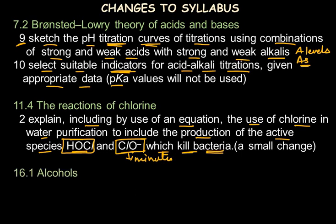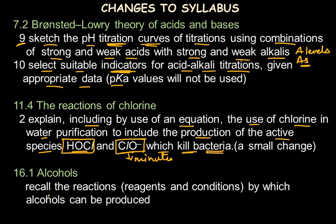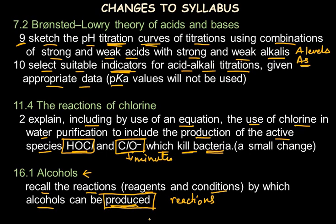The next change is in the topic of alcohols, where it now says to recall the reactions — reagents and conditions — by which alcohols can be produced. Earlier the syllabus only covered reactions of alcohols; now it includes methods to produce them. This change applies not only to alcohols but to all organic topics across all homologous series. The methods of production of carboxylic acids, aldehydes, ketones, and alkenes are all now included in the syllabus, though we were already learning them informally.